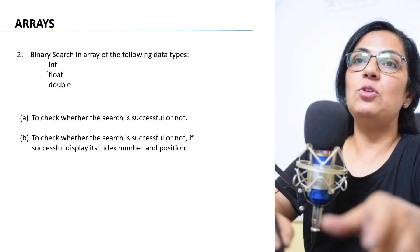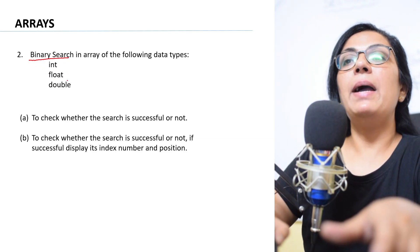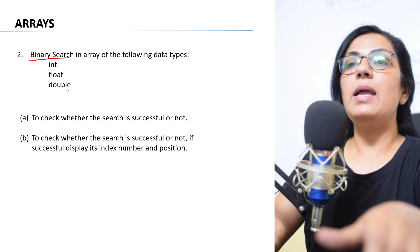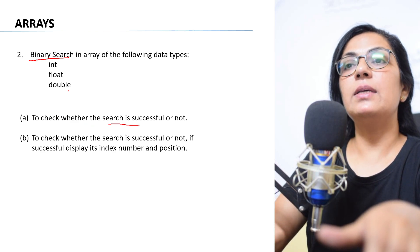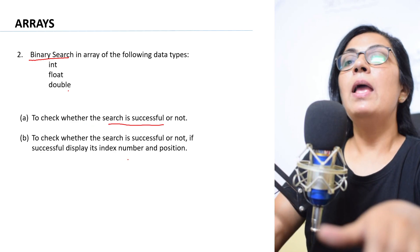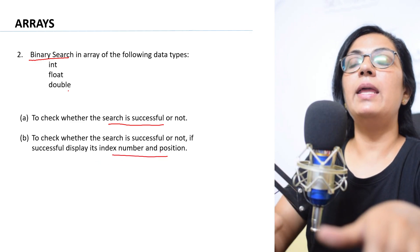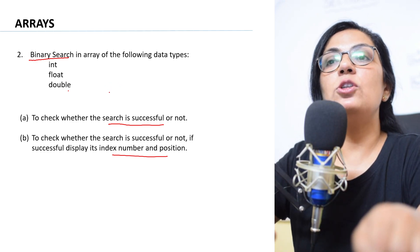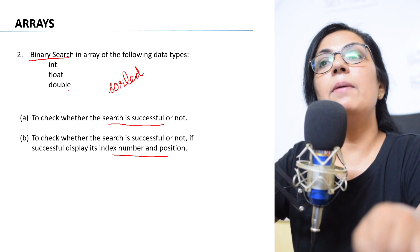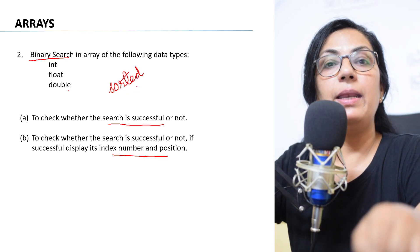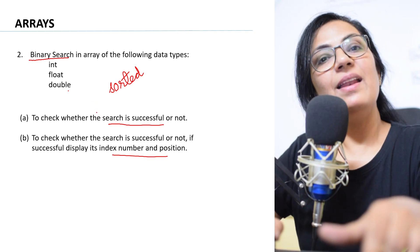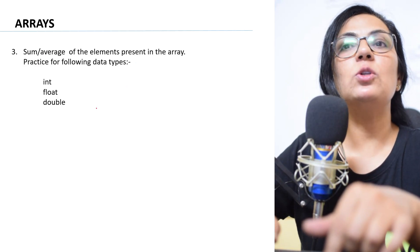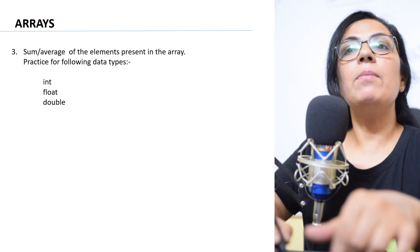The next question you need to prepare is binary search. You need to prepare binary search for int, float, and double data types. You have to check whether the search is successful or not, and if successful, display the index number and position. Always remember: in binary search the array must be in sorted order — that is the primary condition. The array should be sorted in ascending or descending order.